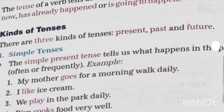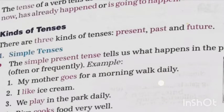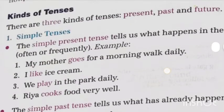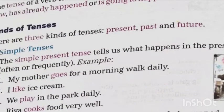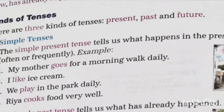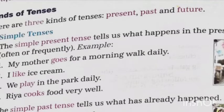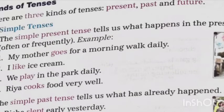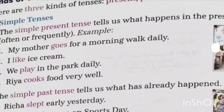The first kind of tenses are the simple tenses: simple present, simple past, and simple future. Simple present tells us if something is happening in the present, and also if something happens often or frequently — a regular or habitual action. For example, 'my mother goes for a morning walk daily,' 'I like ice cream,' and 'we play in the park daily.'